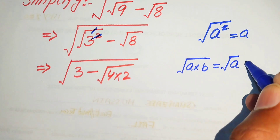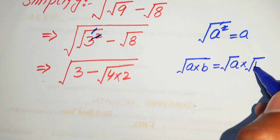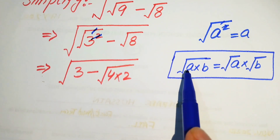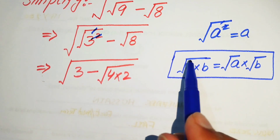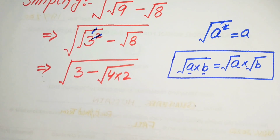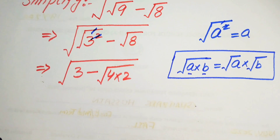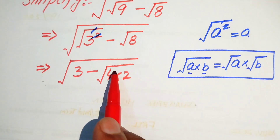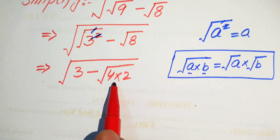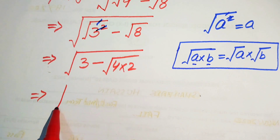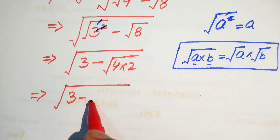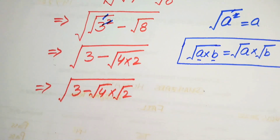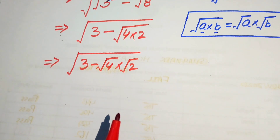According to this law, if you have the radical of a product of two numbers, we write the square root sign separately on both numbers. So we need to separate this square root sign on both terms, and it will be written as square root of 3 minus square root of 4 multiplied by square root of 2.